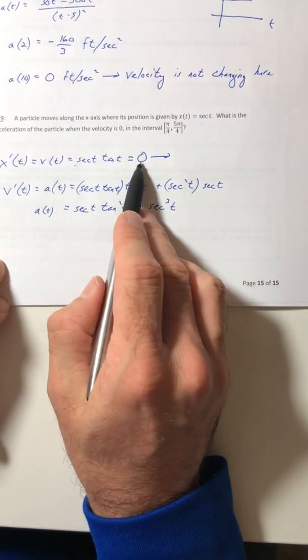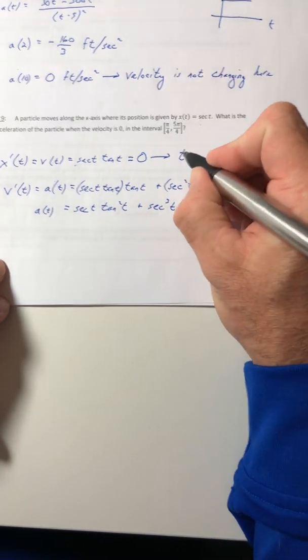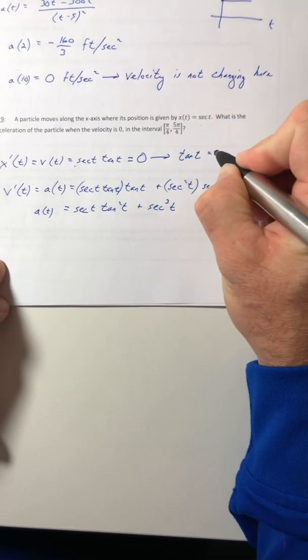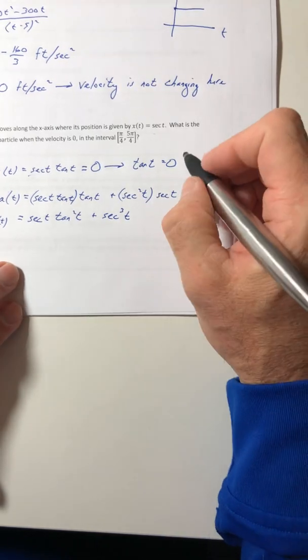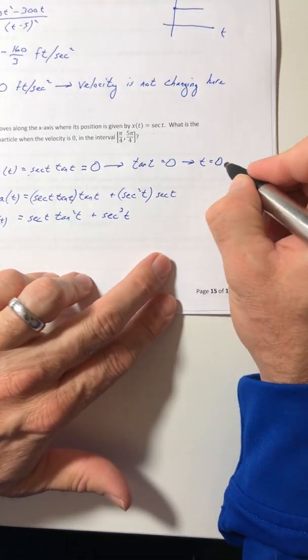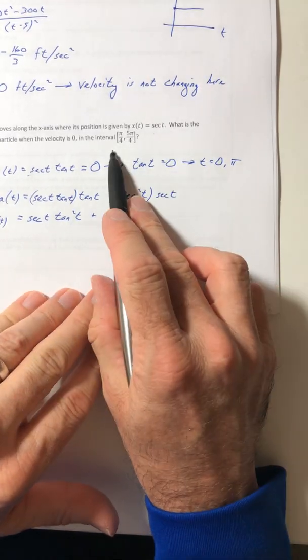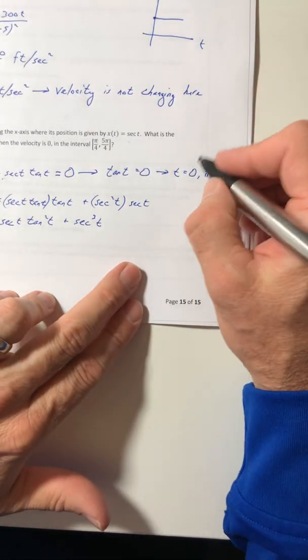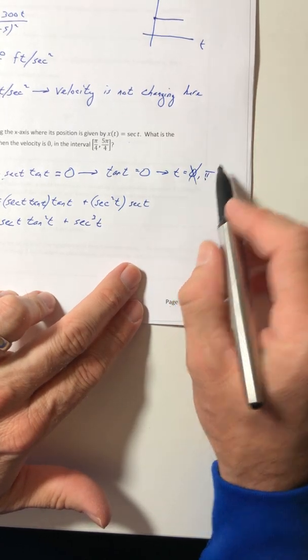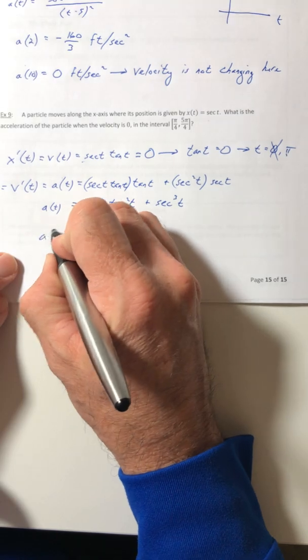Well, secant never equals 0. So that's not going to affect it. It's really just the tangent. So where does tangent equal 0? 0 and pi. But 0 is not in the interval. So I'm just looking at the pi. So now I can stick that into acceleration.